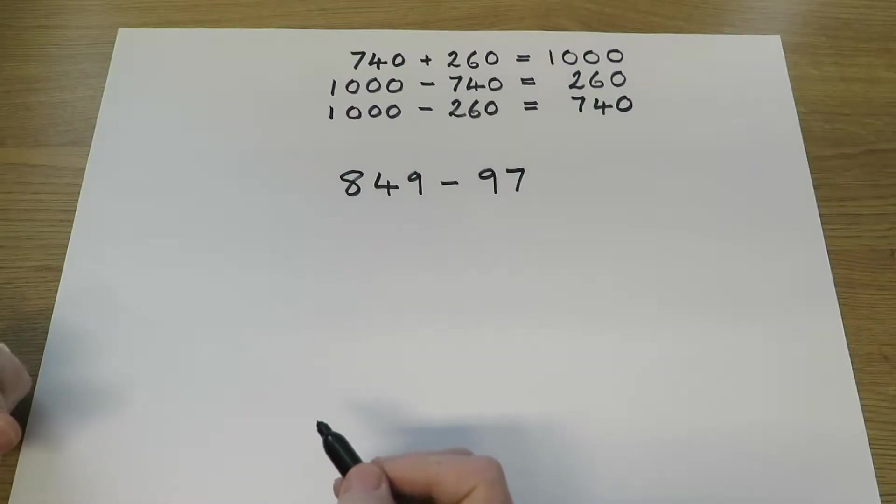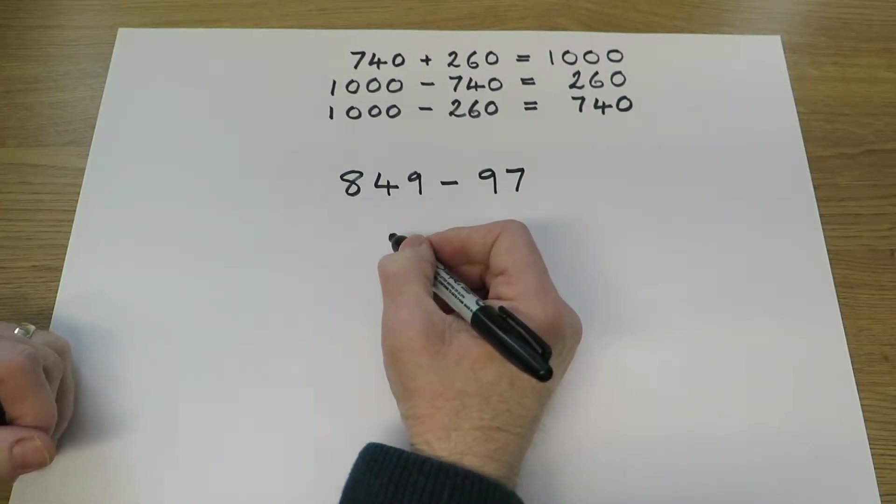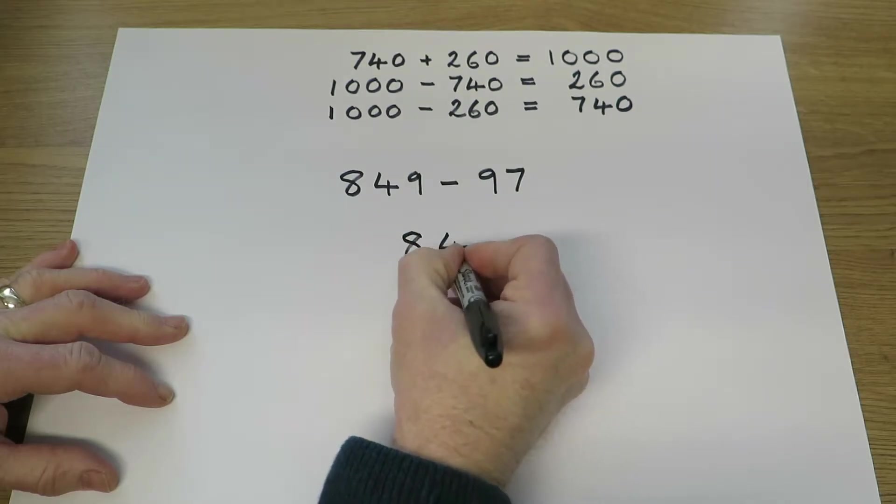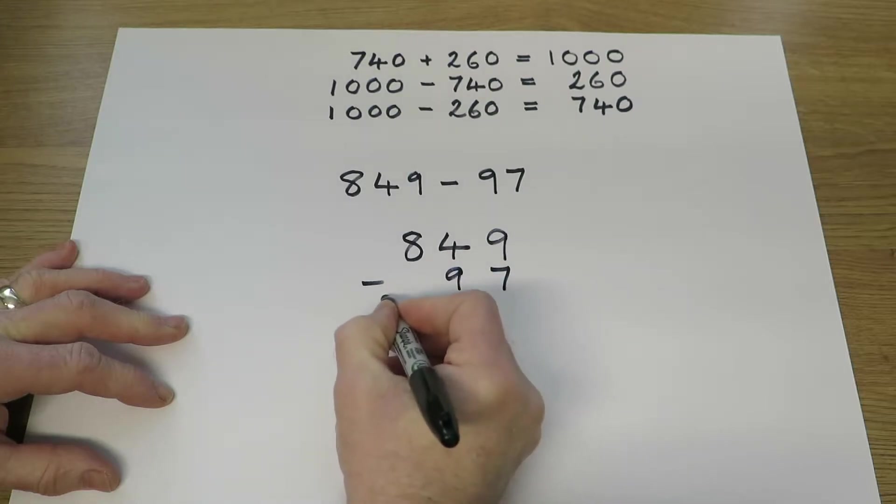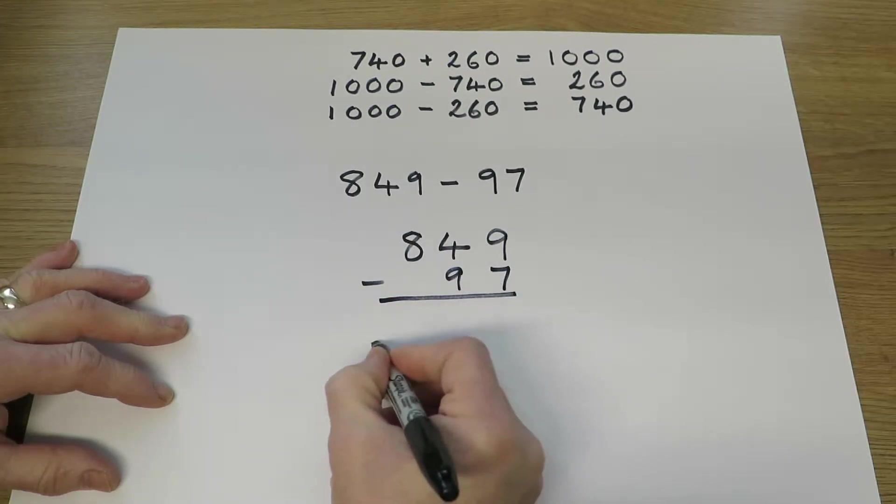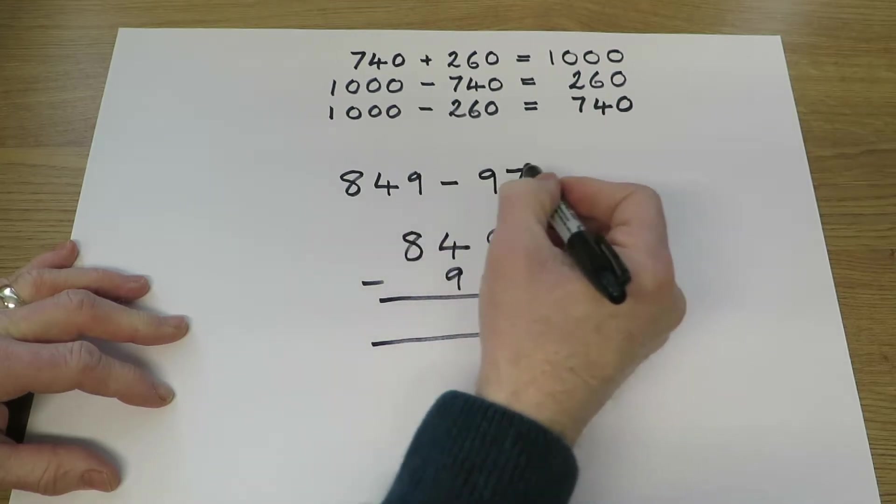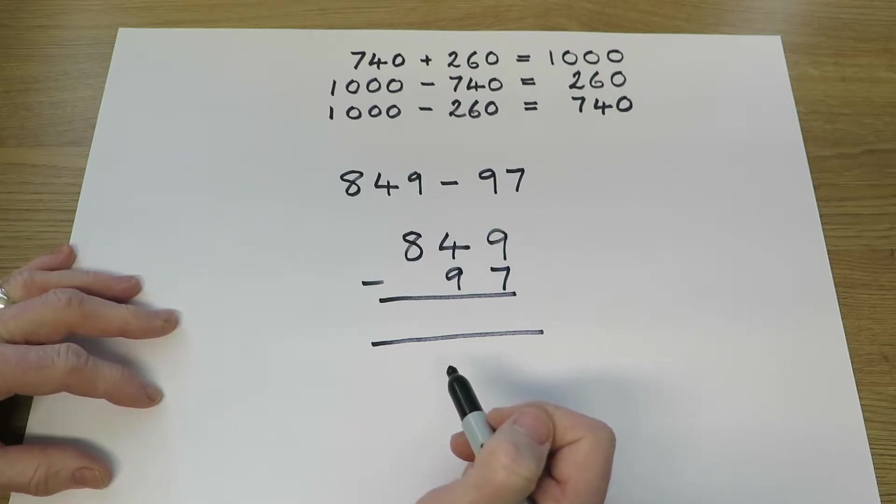The pupils will still work on operations involving two-digit or three-digit numbers, and they will continue setting numbers out in columns. So if we look at this question, in columns that's going to be 849 take away 97, and the key is always to keep the units in line. So the 9 units, 7 units there in line, and that makes the whole process much simpler.